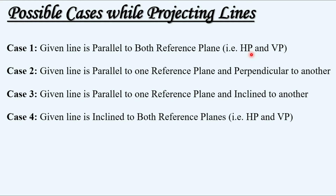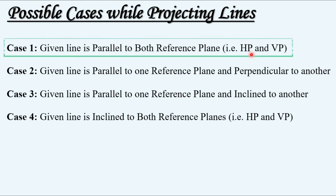These are the four cases possible while projecting the given line. In today's video we will discuss Case 1, where the line is parallel to both reference planes — HP and VP. Here HP is the short form for horizontal plane and VP is the short form for vertical plane.